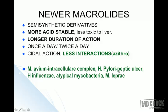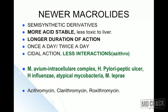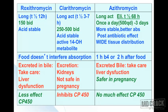Uses of newer macrolides include Mycobacterium avium intracellulare complex, H. pylori peptic ulcer, H. influenzae infections, atypical mycobacterial infections, and Mycobacterium leprae. The names of newer macrolides include azithromycin, clarithromycin, and roxithromycin. They are more acid stable, less toxic to the liver, bactericidal, long duration of action, with special activity against atypical mycobacteria and M. leprae.